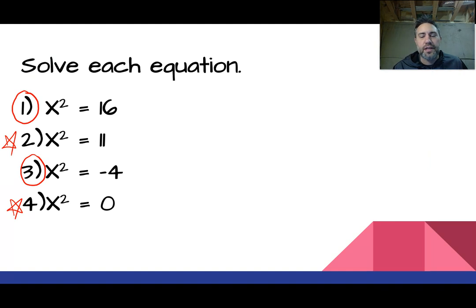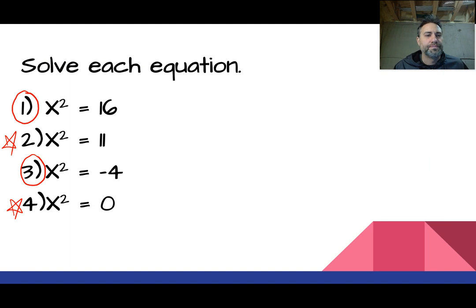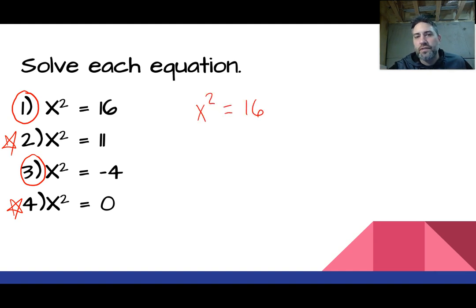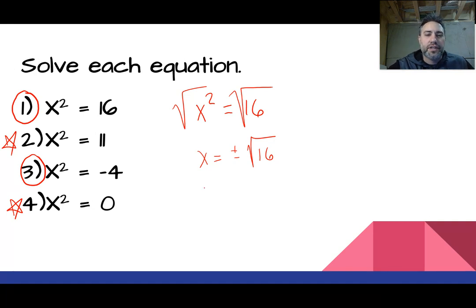We can solve these algebraically because we're just dealing with an X squared, not the BX term. Once we add BX, the solving becomes a lot more complicated. Let's do number one together: X squared equals 16. We know the inverse operation of squaring is taking the square root, so we do that to both sides. I'd like you to write it as plus or minus the square root of 16, which gives X equals plus or minus four.